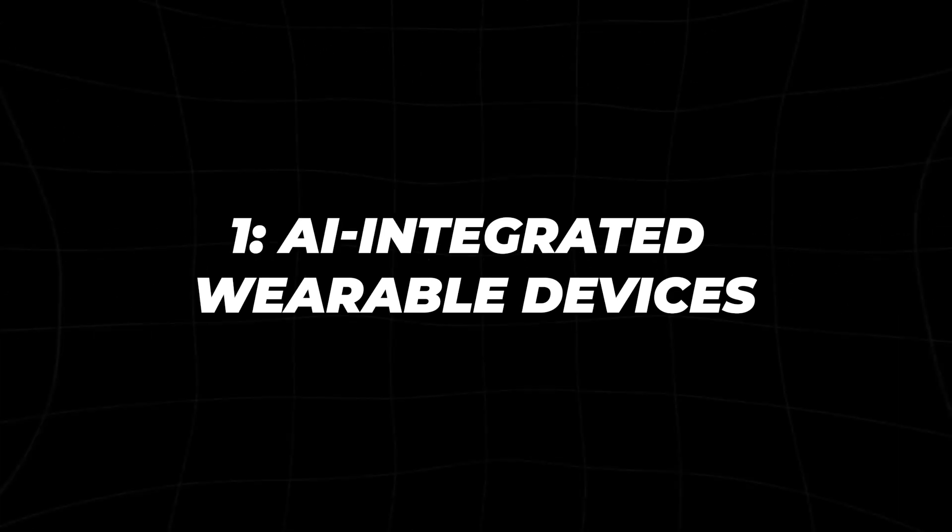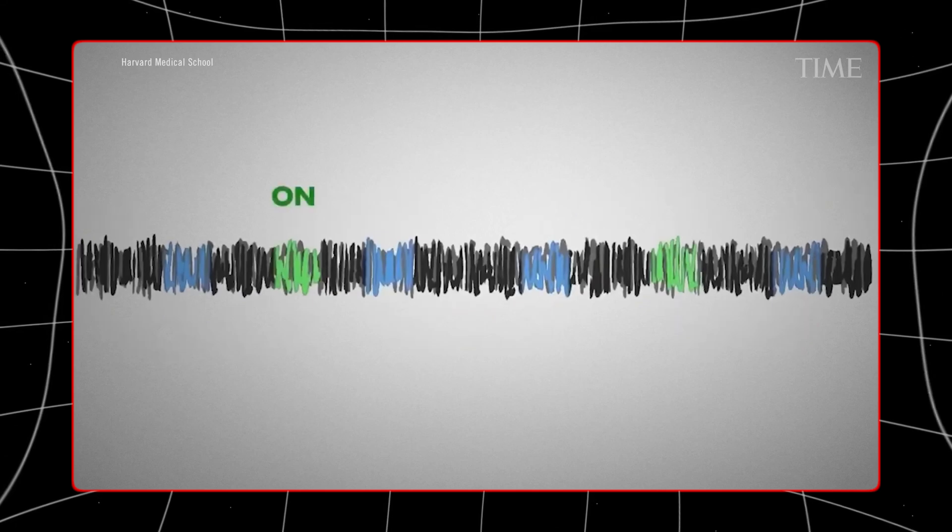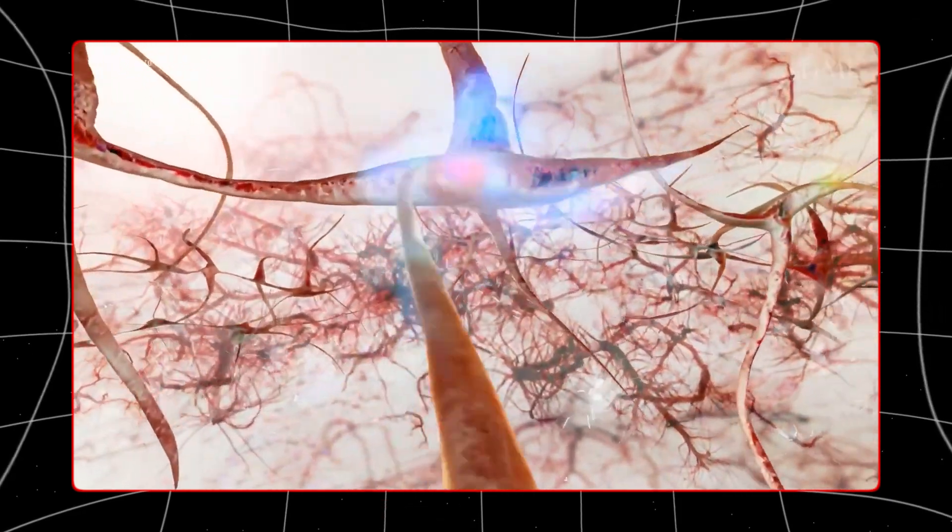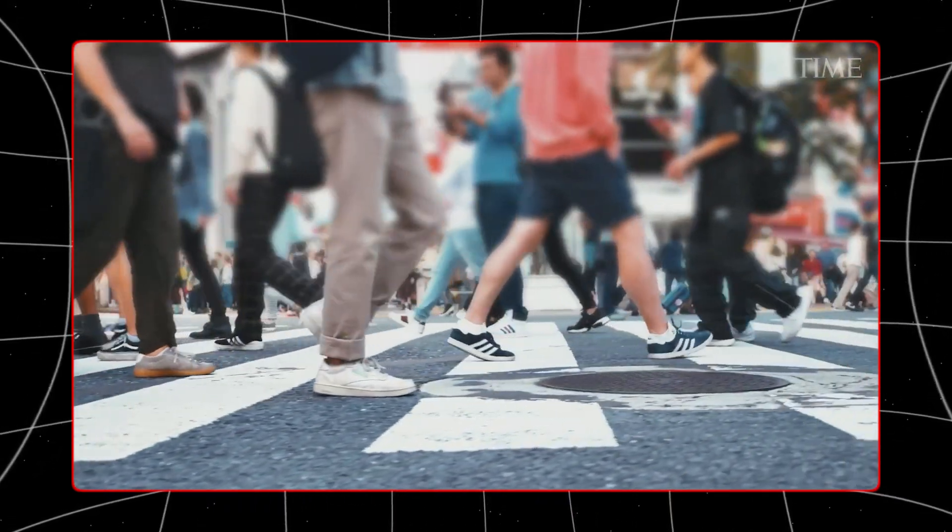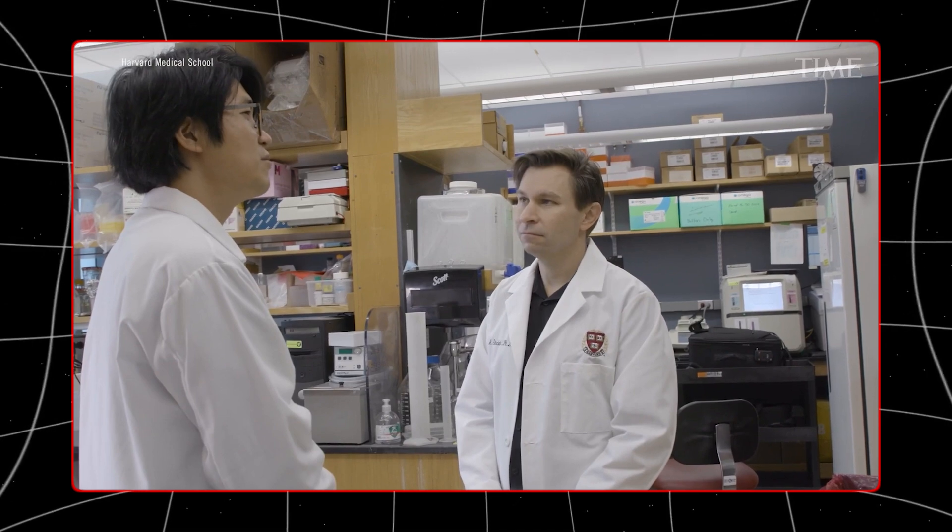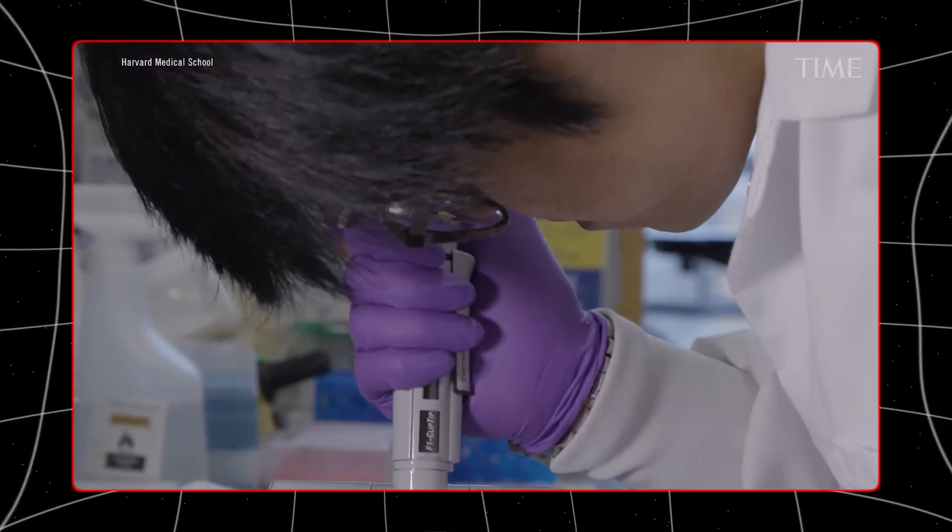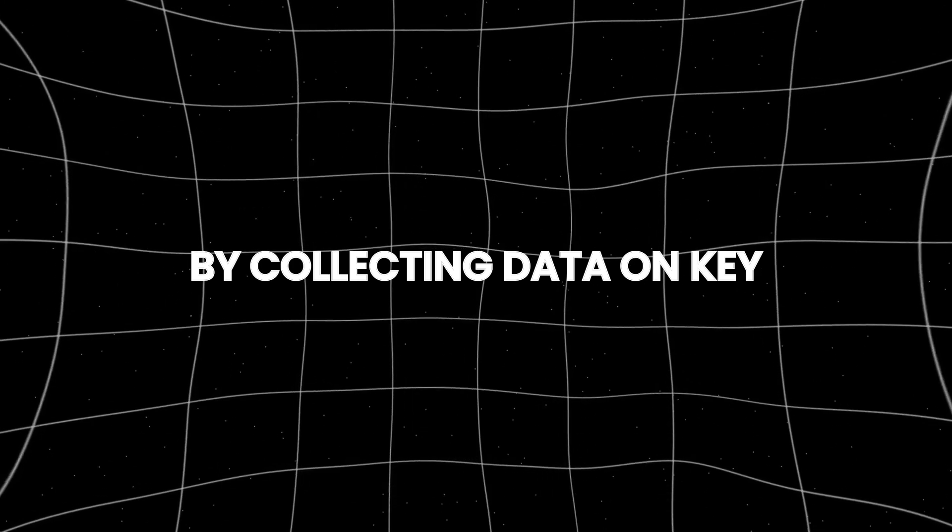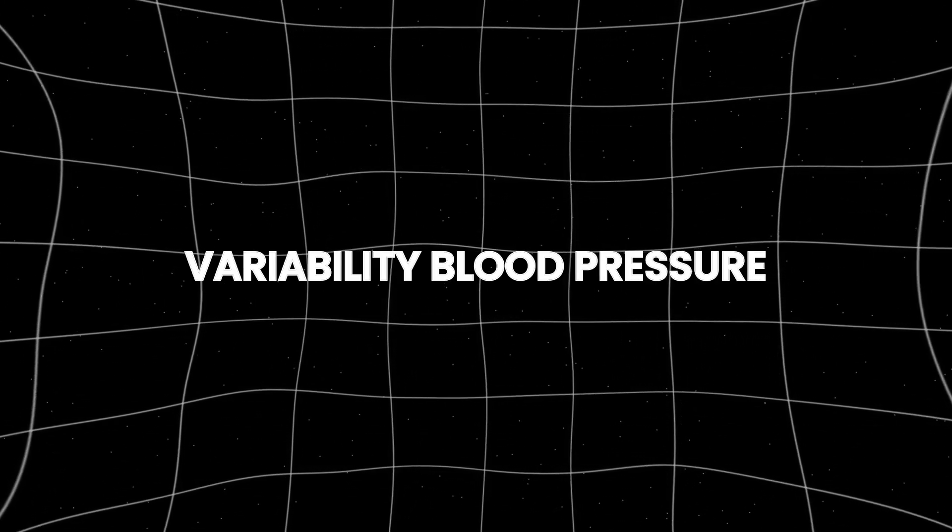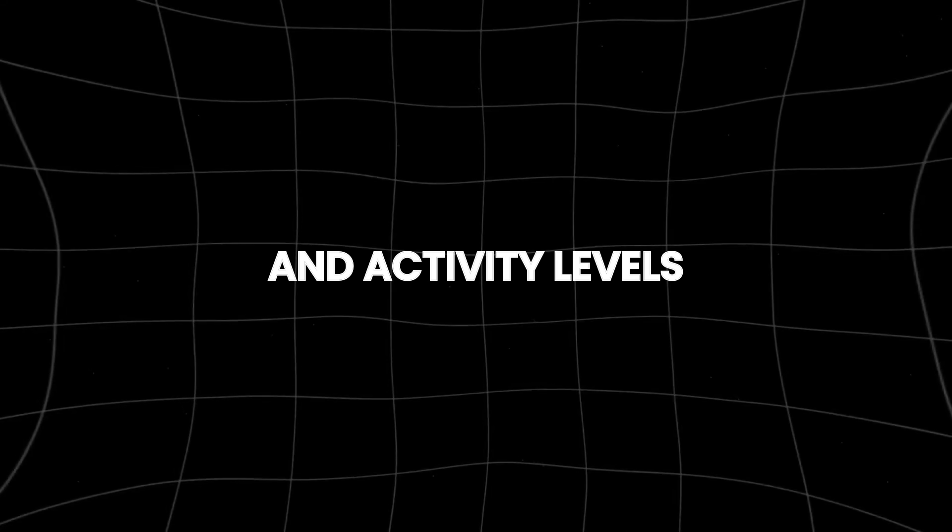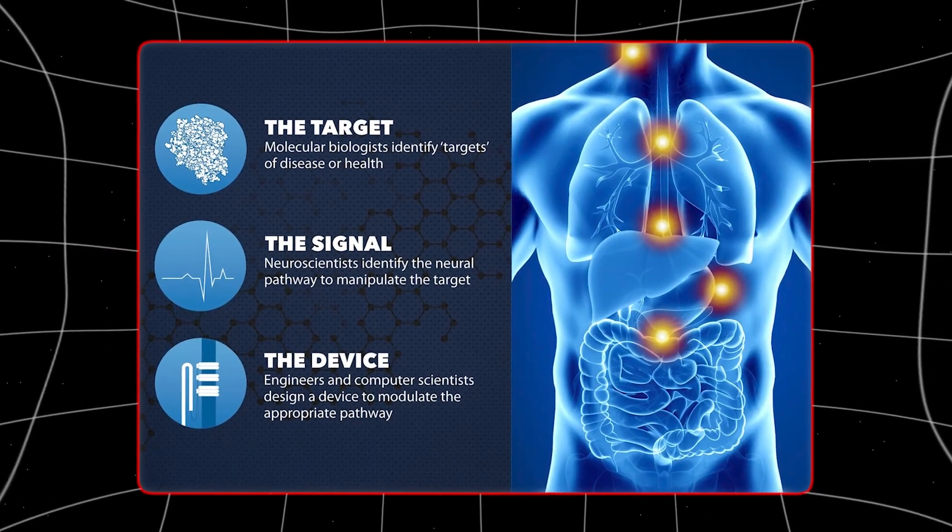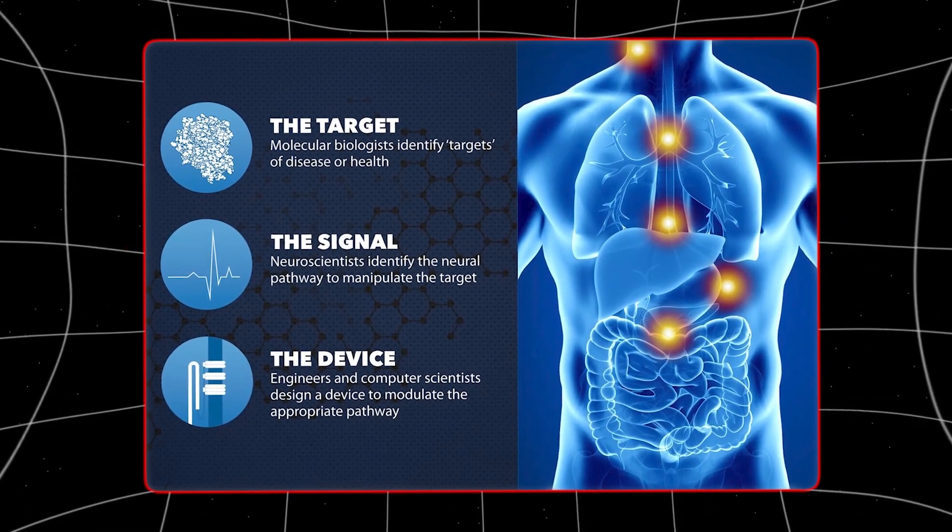Number 1. AI-integrated wearable devices. AI-integrated wearable devices represent a groundbreaking approach to health monitoring and management, particularly in the context of aging. These devices utilize advanced AI algorithms to continuously track physiological parameters and biomarkers associated with aging, offering real-time insights into an individual's health status. By collecting data on key indicators such as heart rate variability, blood pressure, and activity levels, AI-integrated wearables provide a comprehensive assessment of overall health and aging trajectory, allowing users to proactively manage their well-being.